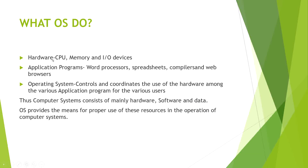Hardware includes components like CPU, memory, and I/O devices. Application programs that you use day to day include word processors, spreadsheets, compilers, and web browsers. The operating system controls and coordinates the use of hardware among the various application programs for the various users.